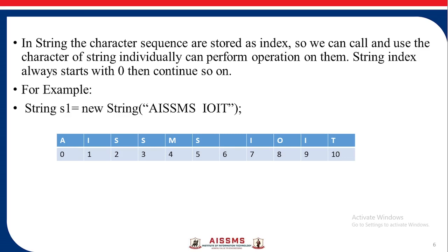In a string, the character sequence is stored as an index, so we can call and use the characters of a string individually and perform operations on them. String index always starts with zero and continues. For example, String s1 = new String("assms ioit") is stored as: index 0 is 'a', 1 is 'i', 2 is 's', 3 is 's', 4 is 'm', 5 is 's', 6 is space, 7 is 'i', 8 is 'o', 9 is 'i', and 10 is 't'.